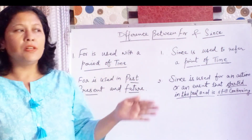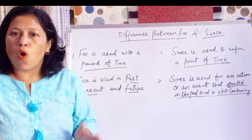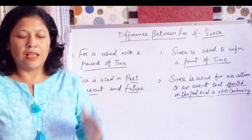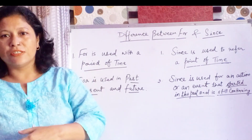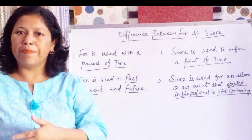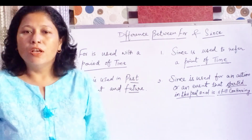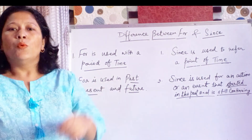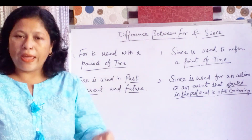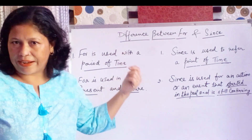Often people use these two in the wrong places. In place of 'for' they use 'since', and in place of 'since' they use 'for'. So we are going to see where they should be used correctly.